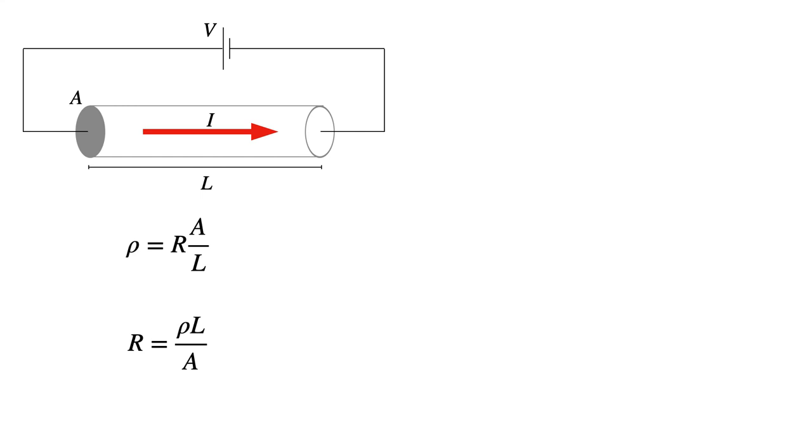The resistance is a function of the electrons and their drift speed bouncing into other things as they move through the wire. So the larger the cross-sectional area, the bigger the wire, the less likely those valence electrons are to bump into things.